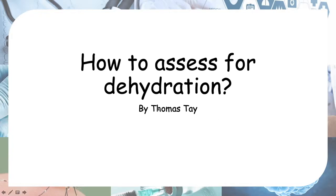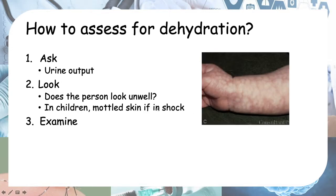Hello everyone. Today we'll be looking at how to assess for dehydration. First, you can ask if they have reduced urine output. In general, reduced urine output indicates that you are dehydrated, because you need to have enough water intake to have enough urine output — if you don't take in enough water, you will have reduced urine output.